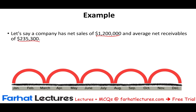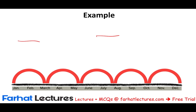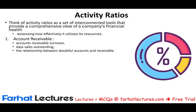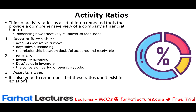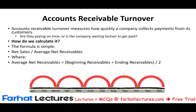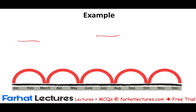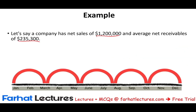The best thing to do is put this ratio into an example. Let's assume net sales is 1.2 million and the average receivable is 235,300. When given only year one with no prior year, assume the prior year is zero, so you take zero plus the current year divided by two. Let's compute the accounts receivable turnover.